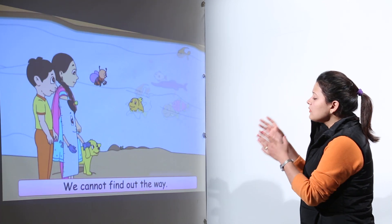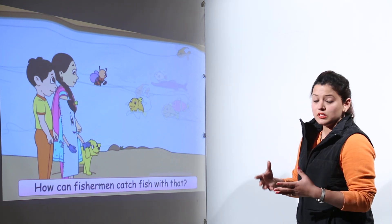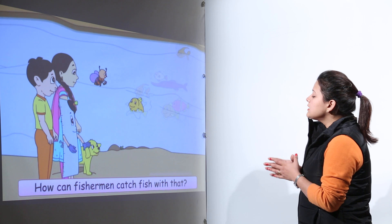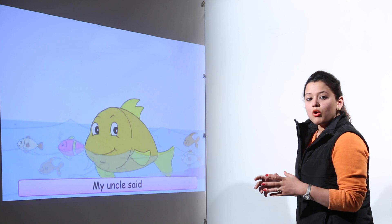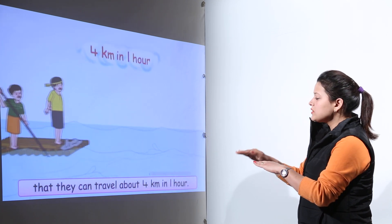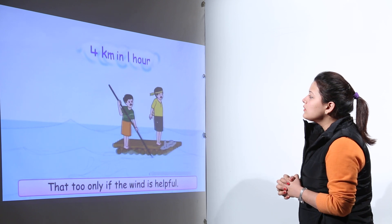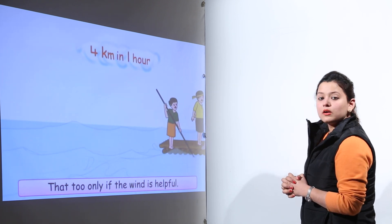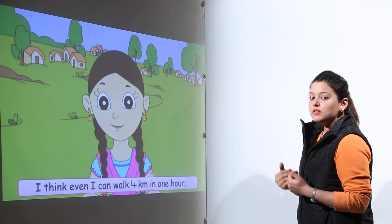Now how do they find out the ways and what are the ways they use to catch fishes? Fishermen catch fish by log boats also. What are log boats? Log boats are boats made up of logs. As you can see, these log boats can travel at four kilometers speed per hour. They can travel four kilometers in one hour.